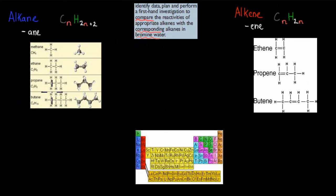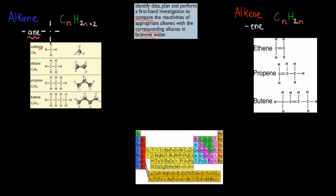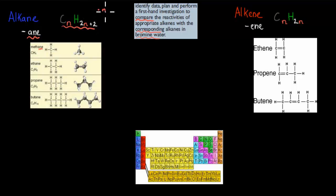Alkanes are the ones which have the -ane ending. So for example, methane, ethane, propane, and butane — we always have that -ane ending. This is the general chemical formula for alkanes. With alkanes, they also have no double bonds, which is different to the alkenes.